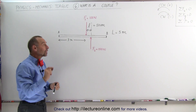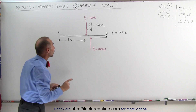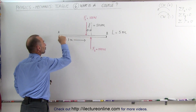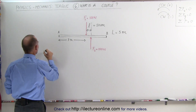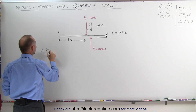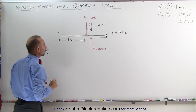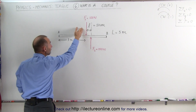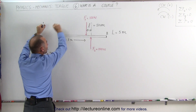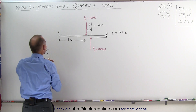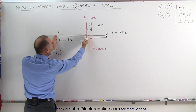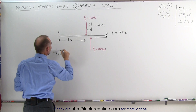In order to understand what a couple is, we're going to calculate the torque caused by those two forces relative to point A. We're going to sum up the torques about point A. We have F1, which causes a clockwise motion about point A. That means that is a negative torque — negative F1 multiplied times the distance, which in this case is 3 meters.